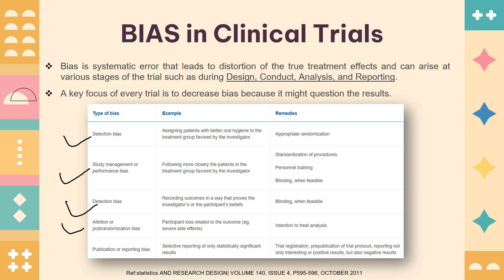The fourth type is attrition bias or post-randomization bias, which involves participant loss related to outcomes such as severe side effects. If investigators know that a drug causes a particular side effect and try to avoid giving it, that is a clear violation of the trial design. To address this, an intention-to-treat analysis is used, where treatment is given to the subject to avoid serious adverse events.